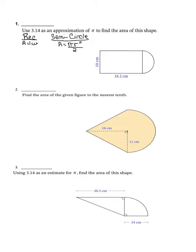To find the area of the rectangle, I multiply 18.2 times 10. When I multiply these two numbers together, I get 182 centimeters squared.